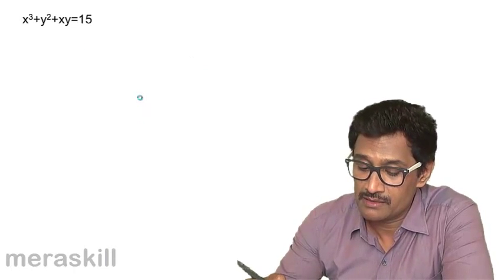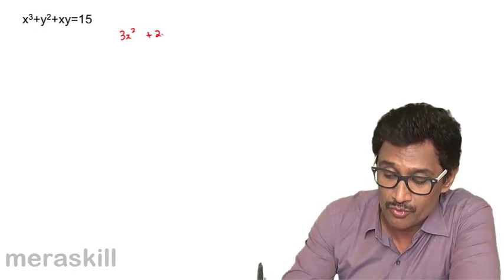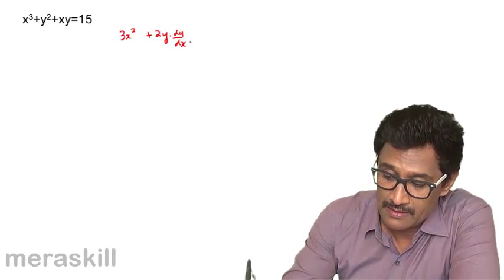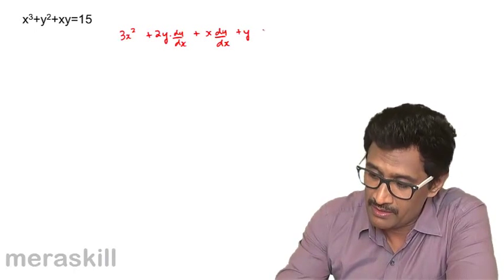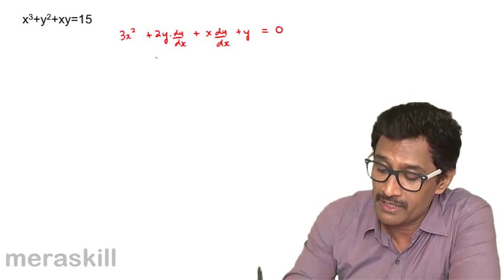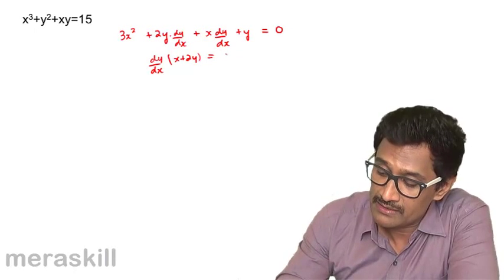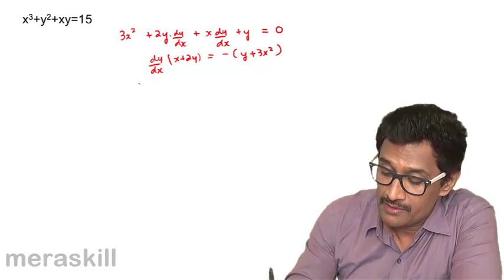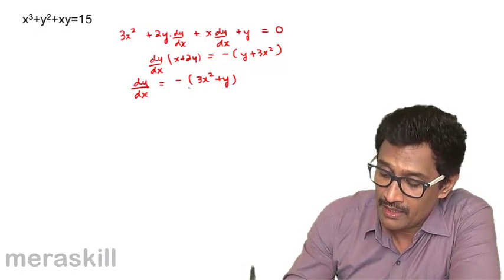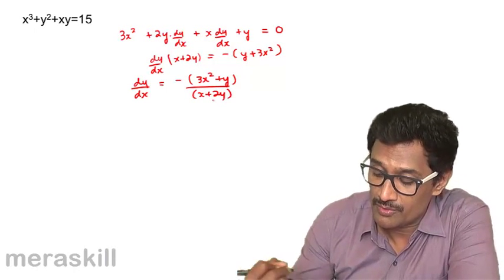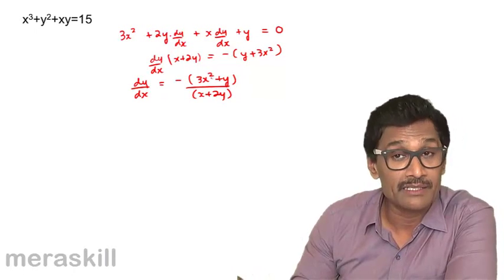For x³ + y² + xy = 0, we find dy/dx: the derivative of x³ is 3x², derivative of y² gives 2y·(dy/dx), and for xy using the product rule: x·(dy/dx) + y·1 = 0. Collecting dy/dx terms: dy/dx·(x + 2y) = -(y + 3x²), so dy/dx = -(3x² + y) / (x + 2y).